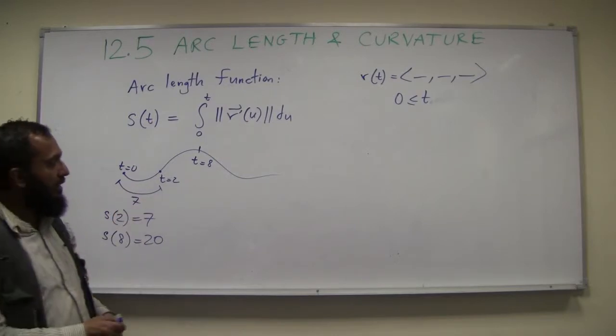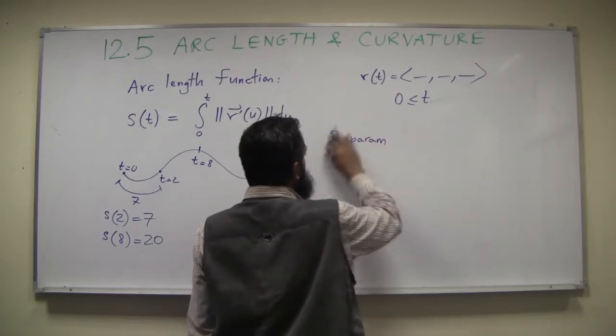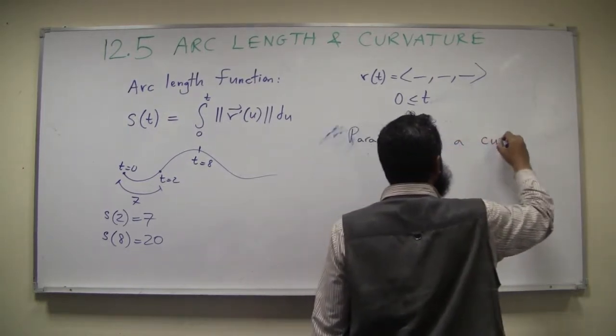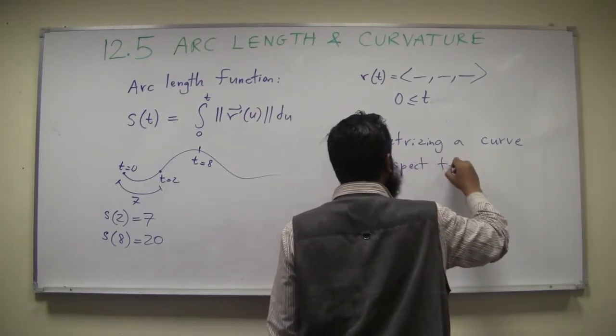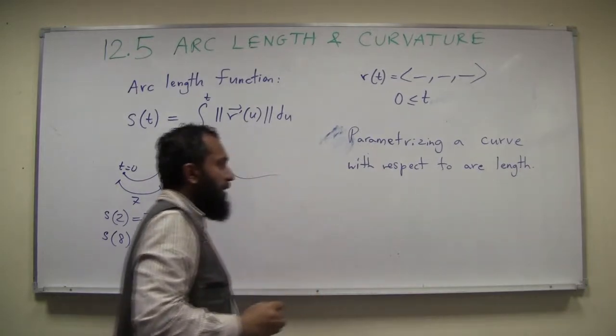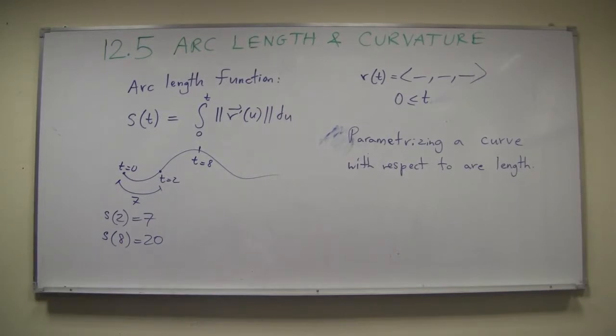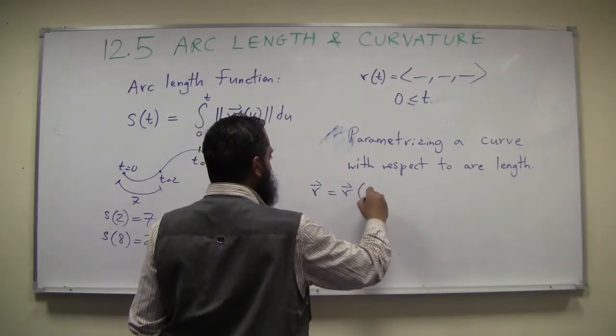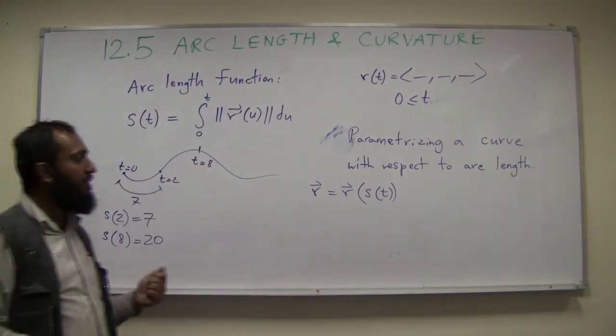This is going to connect to another important concept, which is reparameterizing, or let's say parameterizing a curve with respect to arc length. In other words, we want r in terms of the arc length function. What will be the benefit of doing that? The benefit will be this.